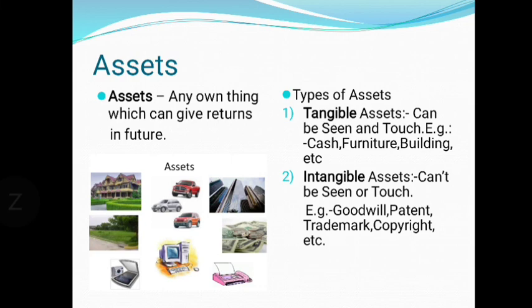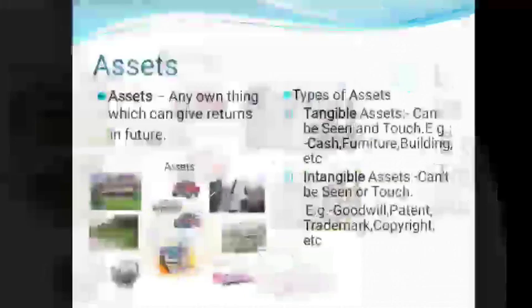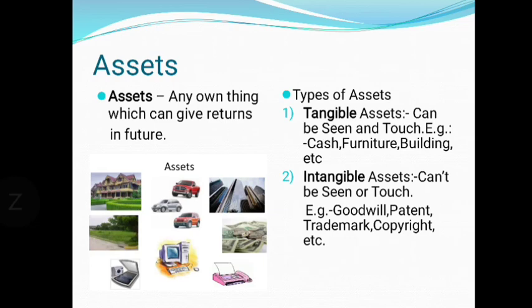Next term is assets. In accounting, an asset is any own thing which can give a return in future — meaning anything owned by the business which is going to give returns in future, either in terms of money or productivity. For example, a motor car used for daily business purposes is called an asset. Land, building, computer, cash, and furniture are all counted as assets because we are getting something from them.